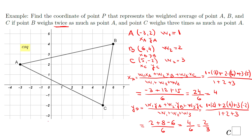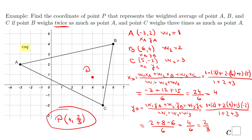So the coordinates of point P will be 4 and 2 over 3. Somewhere here is the point P. Let's see if it makes sense — the weight of point C is 3, so it's pretty close to C, closer to C than to B and A. I think that is a reasonable answer.